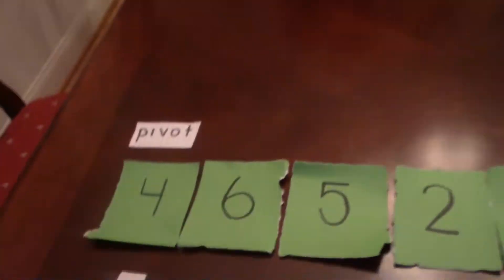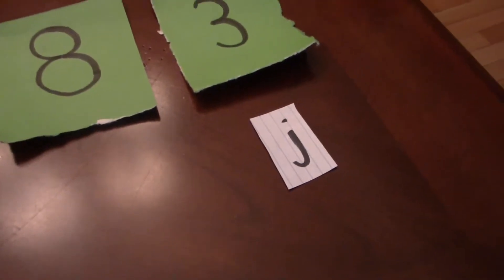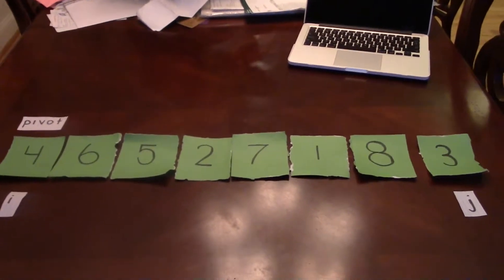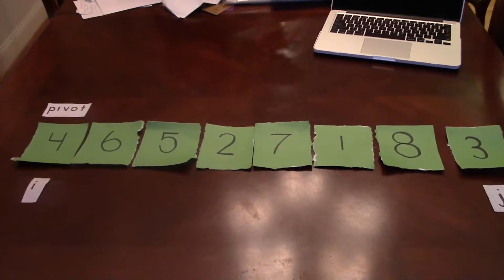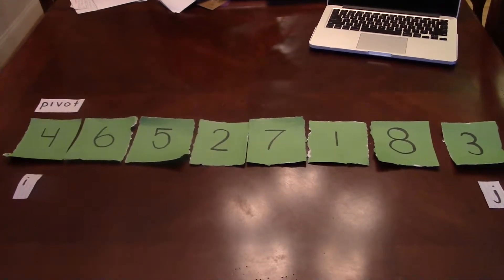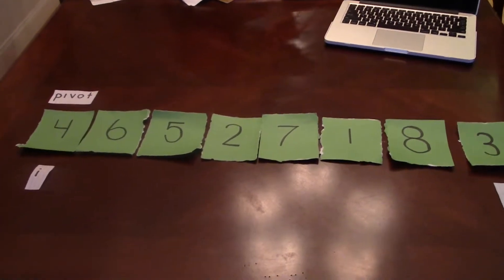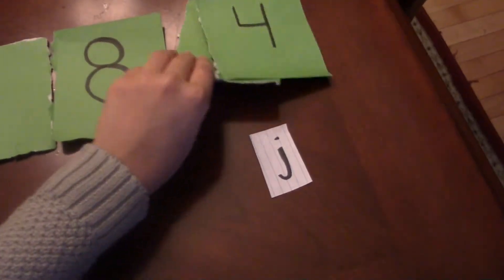So as you can see right now our pivot is four, and we have our i started at the very left and j started at the very right. So the first thing we have to do is compare those two numbers to our pivot. So because three is smaller than four we're going to swap those two numbers, so we're just gonna swap those two and then we move our counters over.